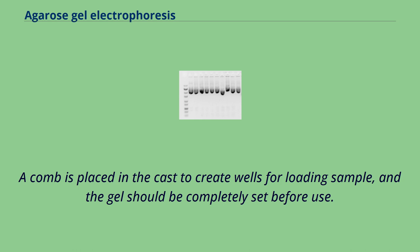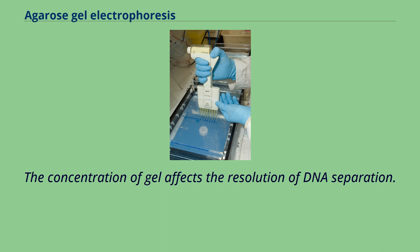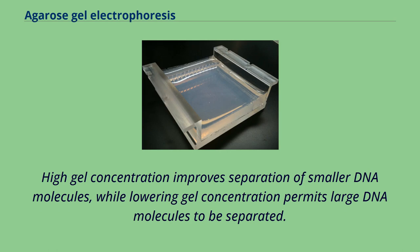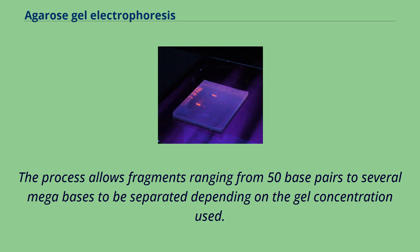Agarose gel is composed of microscopic pores through which molecules travel, and there is an inverse relationship between pore size and agarose concentration — pore size decreases as the density of agarose fibers increases. High gel concentration improves separation of smaller DNA molecules, while lowering gel concentration permits large DNA molecules to be separated. The process allows fragments ranging from 50 base pairs to several megabases to be separated depending on the gel concentration used.